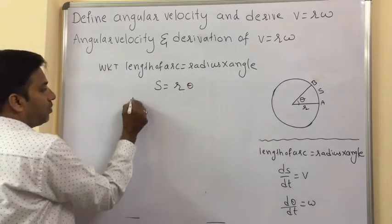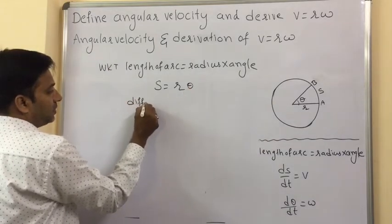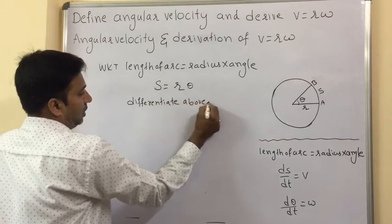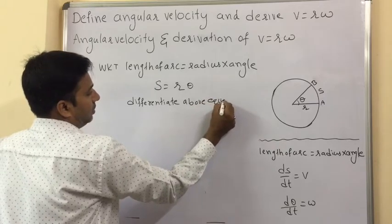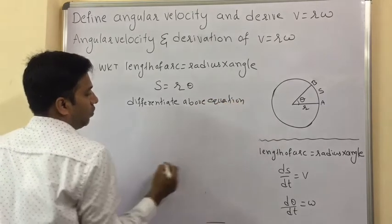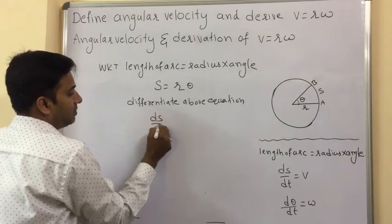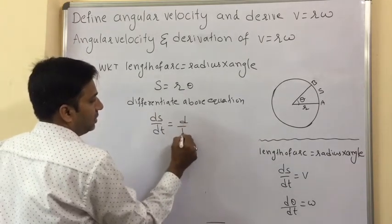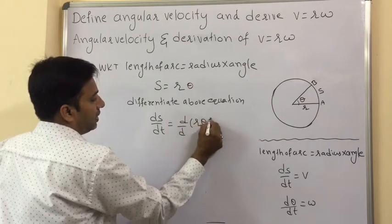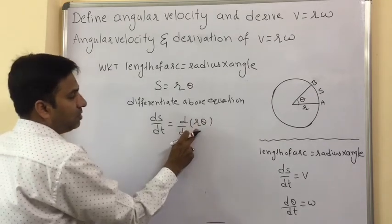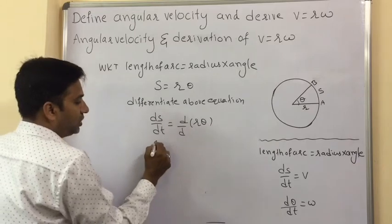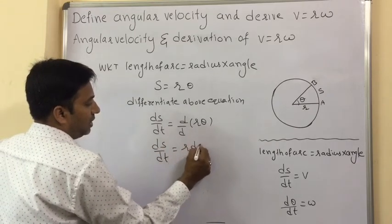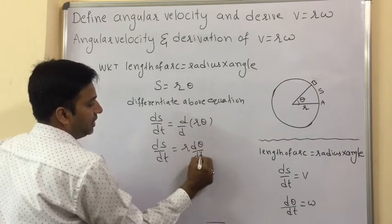Now differentiate the equation s equals r-theta with respect to time. We get ds by dt on the left side. Since r is constant, we take it before the differentiation on the right side, giving ds by dt equals r times d-theta by dt.